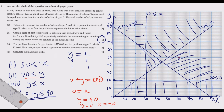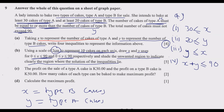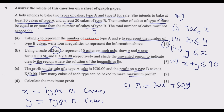Now Question C: the profit function is P = 30X + 50Y, since type A cake gives a profit of 30 and type B gives a profit of 50. Because we earn more profit per cake from Y (50) than from X (30), it is more profitable to maximise Y while keeping X at its minimum. On the graph, we look for the point in the feasible region that has the maximum value of Y.